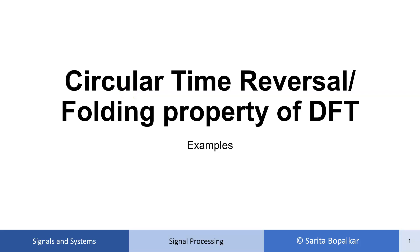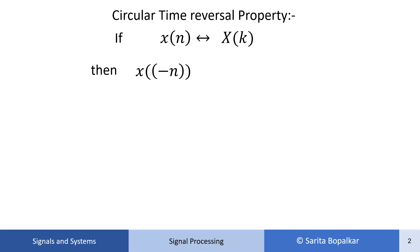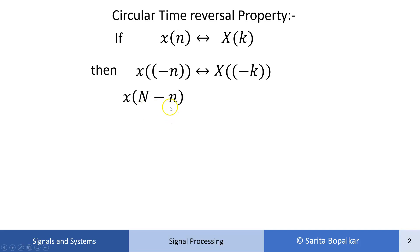In this video we are discussing circular time reversal, or circular folding property of DFT, and we are solving one example based on it. Circular time reversal property: if x[n] is the sequence and its DFT is X[k], and if we circular time reverse x[n], its effect in the frequency domain is that X[k] also gets reversed. This symbol indicates circular time reversal. The same circular time reversal can be written as x[-n] with DFT X[-k]. In some books you may find circular time reversal written in this form.